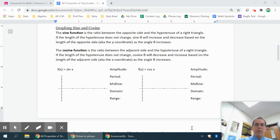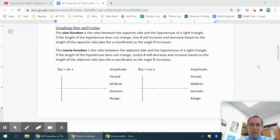As we graph the sine and cosine function, first you need to realize that sine is a ratio between the opposite side and the hypotenuse, whereas cosine is the ratio between the adjacent side and the hypotenuse.